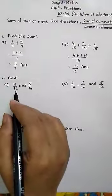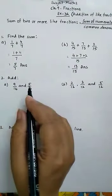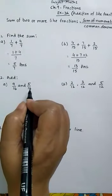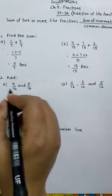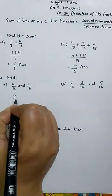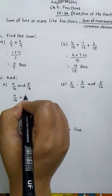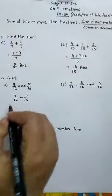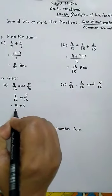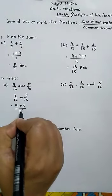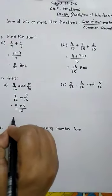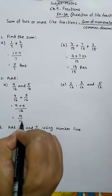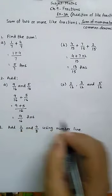There is another type of question or we can say another form of question. We have to add 9 by 16 and 5 by 16. First of all write the numbers as 9 by 16 plus 5 by 16. After that the method is same as before. So 9 plus 5 whole upon the common denominator 16. So 9 plus 5, 14 upon 16. This is the answer.